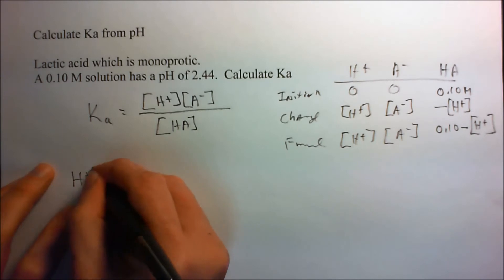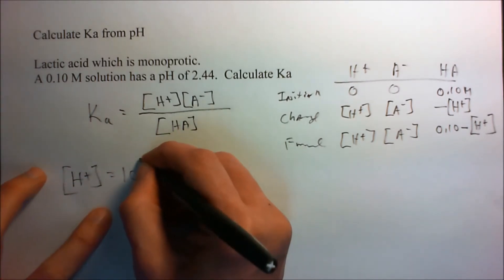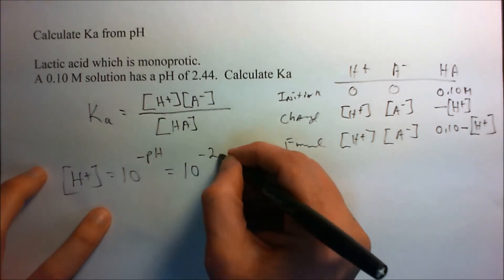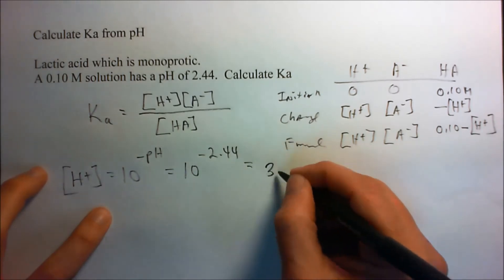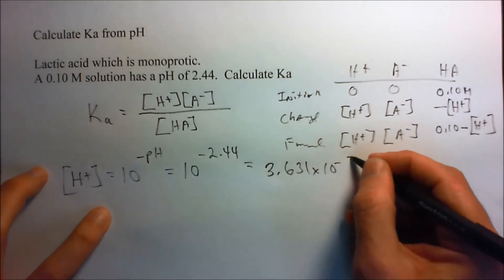So, the H plus concentration is equal to 10 to the minus pH. And that's 10 to the minus 2.44, and that gives me 3.631 times 10 to the minus third.